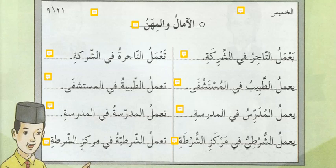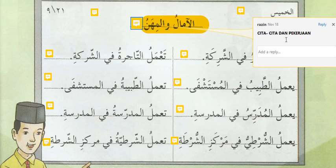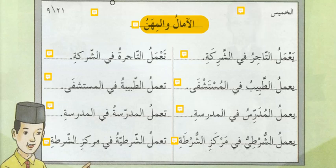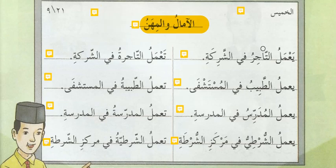Sama-sama kamu dengar dahulu kemudian kamu cuba baca. Al-Amalu Wal-Mihanu. Bermaksud cita-cita dan pekerjaan. Kita tengok ada dua bahagian — bahagian sebelah kanan adalah untuk mudhakar, iaitu untuk lelaki, dan sebelah kiri pula ialah al-mu'annas untuk perempuan. Ada perbezaan antara keduanya dari segi ayat, maksudnya sama cuma ayat dan huruf yang berbeza.